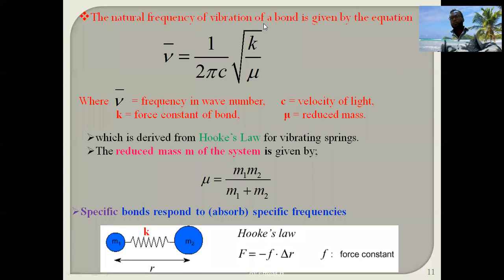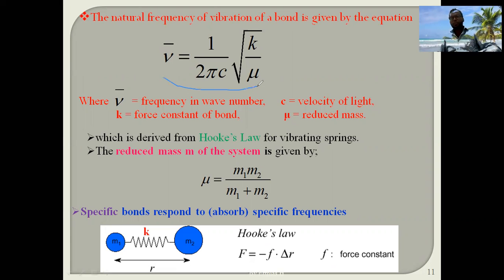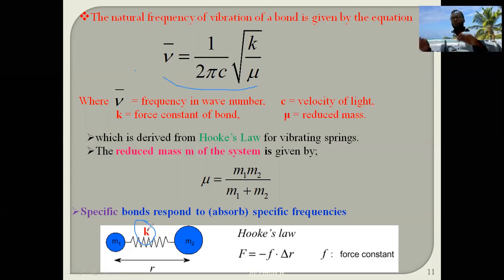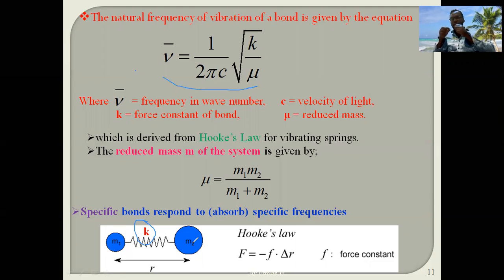The vibrational frequency equation, derived from Hooke's Law, contains: the frequency in wavenumbers, the term 1/(2πc), the force constant k of the bond, and the reduced mass µ. For a diatomic molecule with atoms m₁ and m₂, when IR light interacts with the sample, there is stretching and compressing of the bond, called symmetrical stretching when both atoms stretch equally.